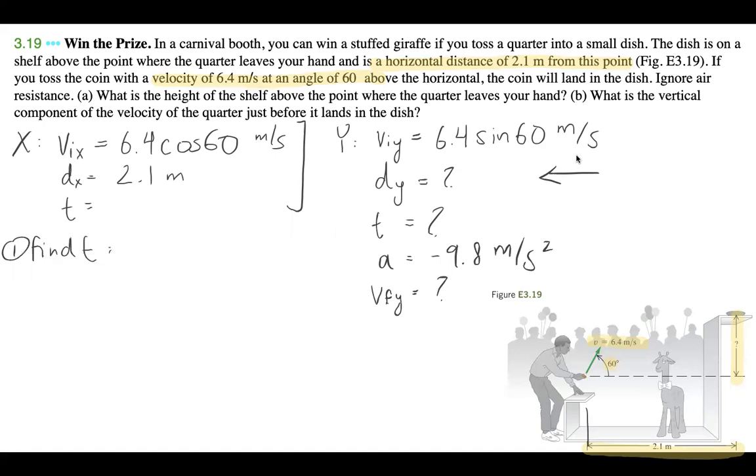So to find t, we need to do t equals distance over speed, right? And we have 2.1 divided by 6.4 cos 60. And I'm going to double check my work: 2.1 divided by 6.4 cos 60. And I'm getting t as 0.65625 seconds. Okay, so I'm going to write that down right over here: 0.65625 seconds.